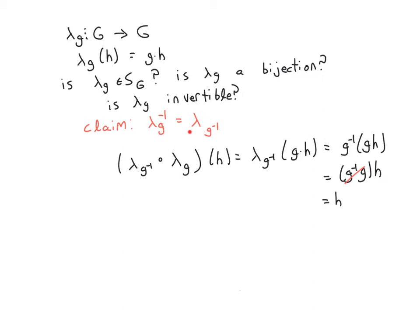So let's actually check that this is true. What do you have to do? You have to show composing lambda of G with lambda of G inverse gives you the identity. And lambda of G inverse with lambda of G gives you the identity. So I need to take another element of H, apply this function to it, and see that I get H. Well, let's do this calculation.